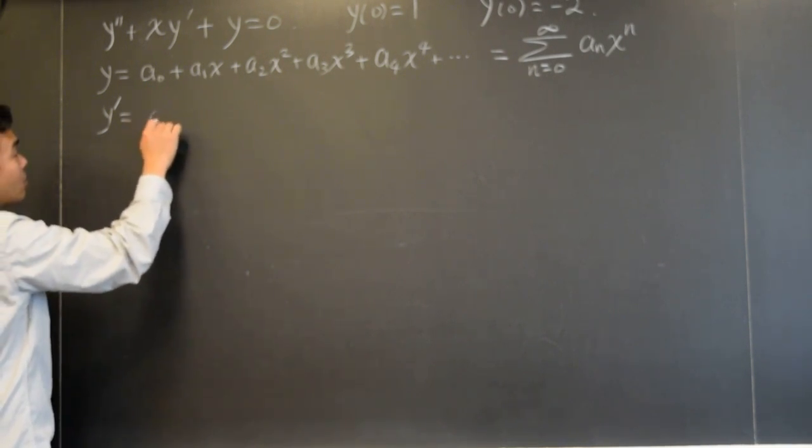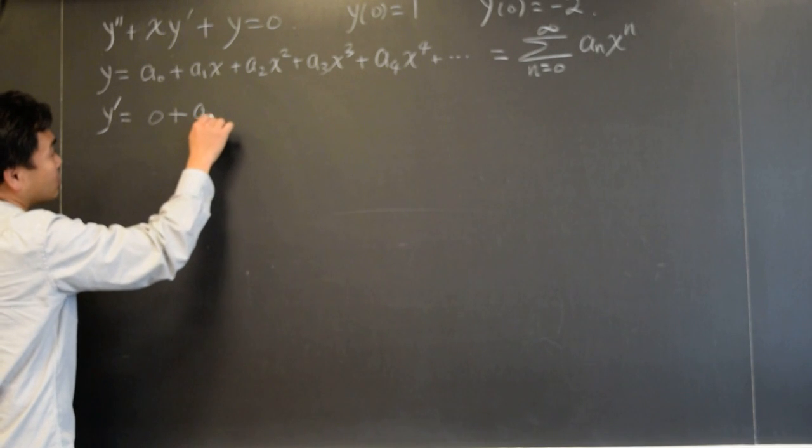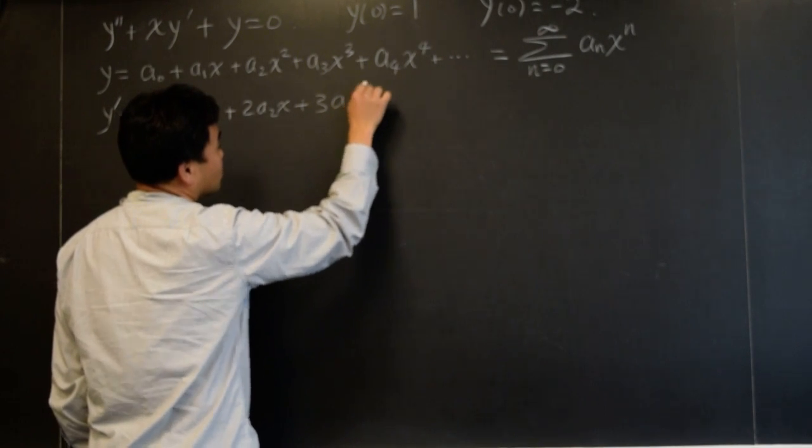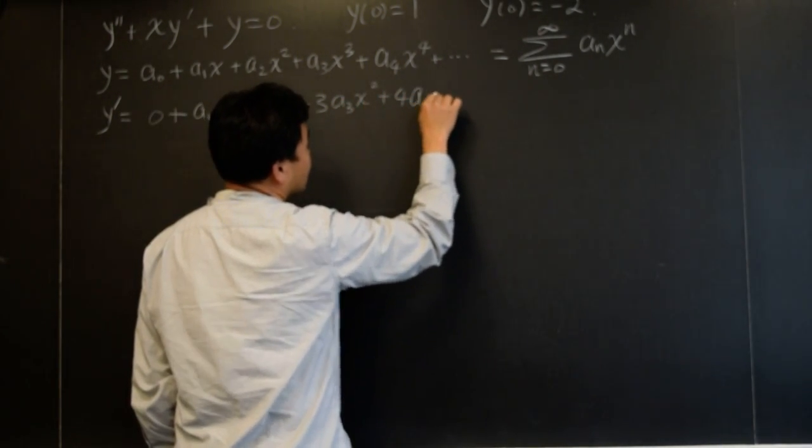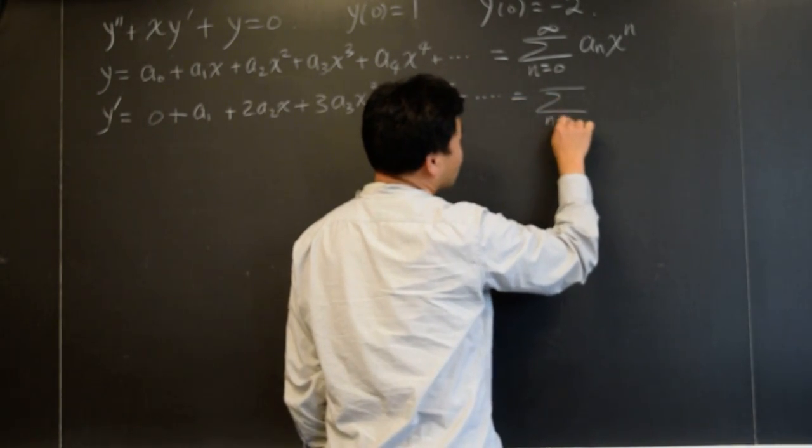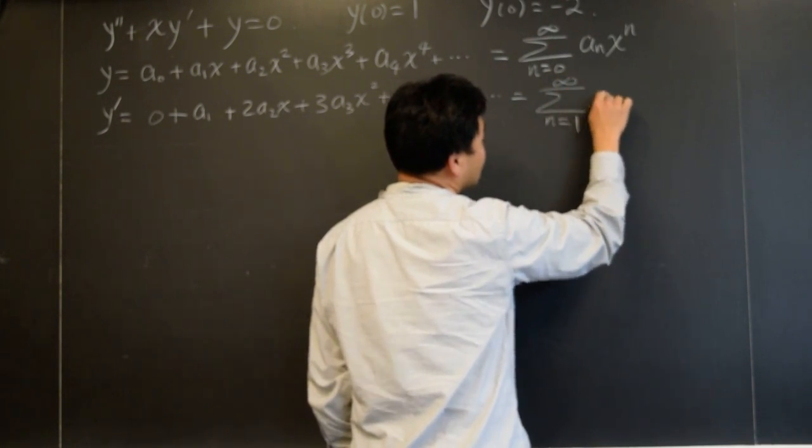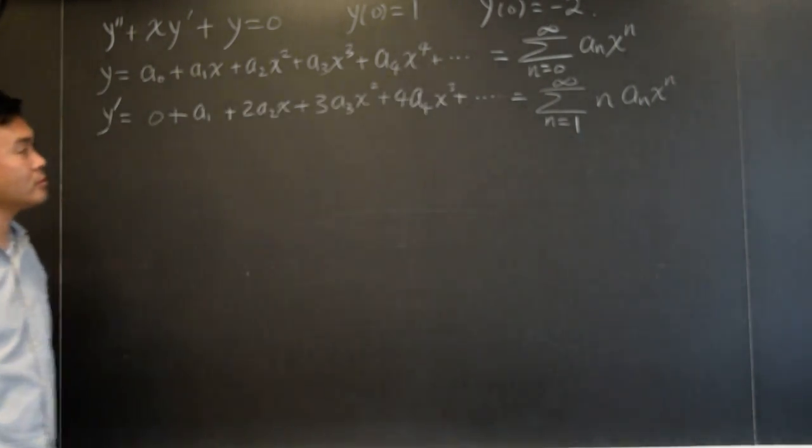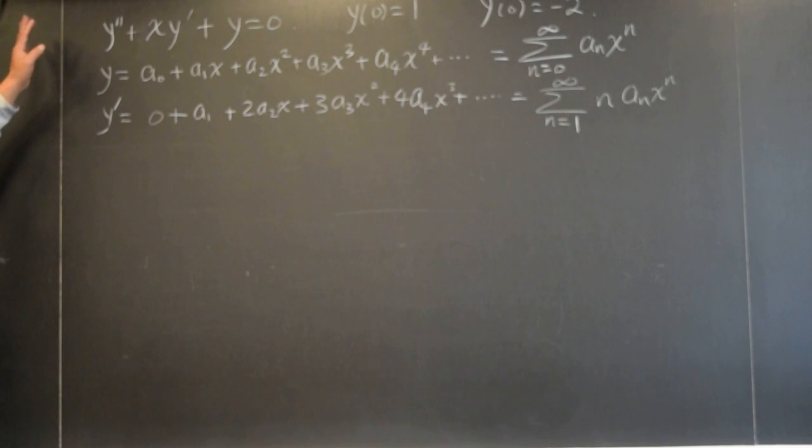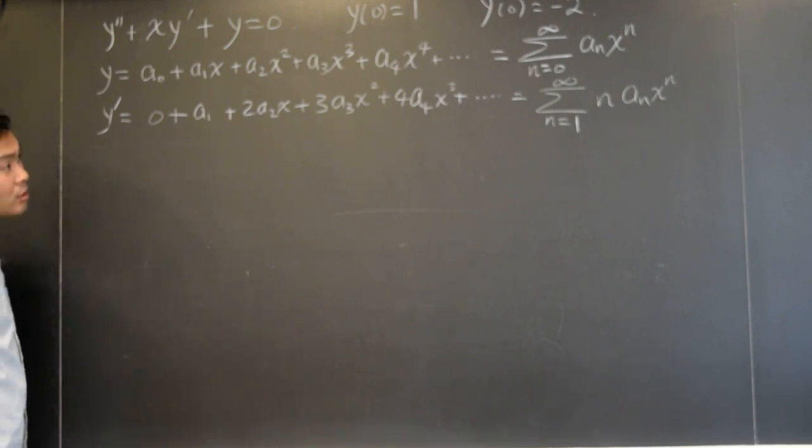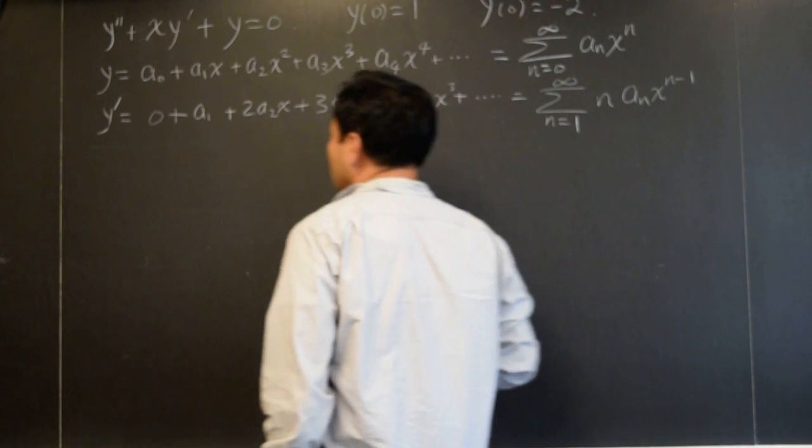If I differentiate this, a zero becomes zero, a one, two a two x, three a three x squared, four a four x cubed plus dot dot dot, which can also be written as n equals one to infinity, n a n x to the n minus one. And I differentiate it one more time because I have to plug everything in there. There's one thing, however, I want to discuss before I plug this in. Yes? It can be x to the n minus one. Oh, thank you.